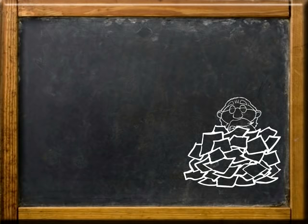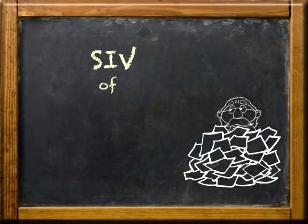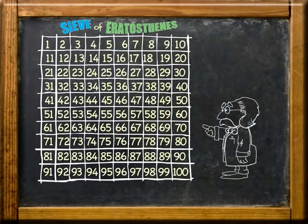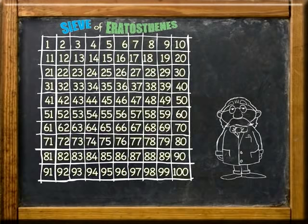I've had several requests to show the workings of the Sieve of Eratosthenes, so here goes. It's an ancient Greek method of finding prime numbers in an array or the hundreds chart. It was created by Eratosthenes, one of those Greek mathematicians from way back. We can use this to identify prime numbers up to 100. The following steps will help us find the prime numbers.